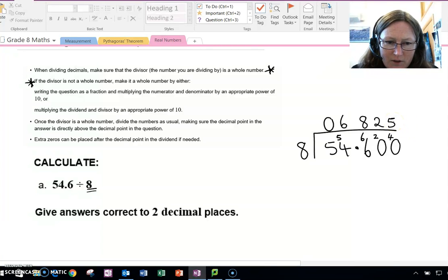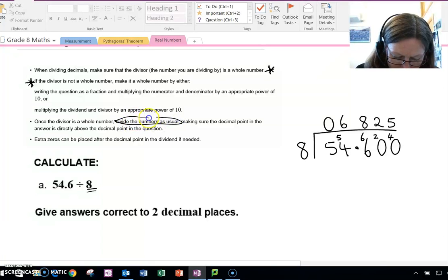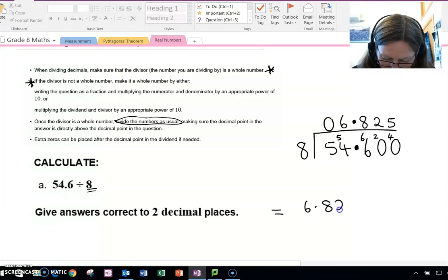So once the divisor is a whole number, divide the numbers as usual, which we've just done, and then we'll make sure the decimal point in the answer is directly above the decimal point in the question. There's the decimal point in the question, so there's the decimal point in our answer. So the answer is 6.825.